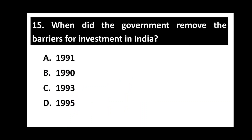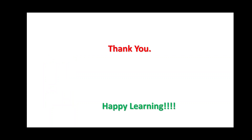Question number fifteen. When did the government remove the barriers for investment in India? Options are: 1991, 1990, 1993, 1995. The right option is option A, that is 1991. Thank you very much. Don't forget to watch part 2 of the same topic.